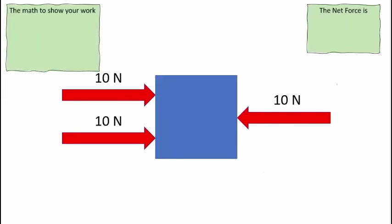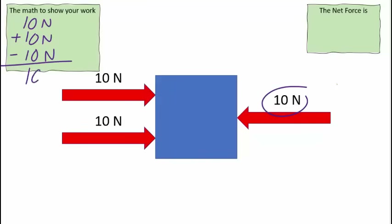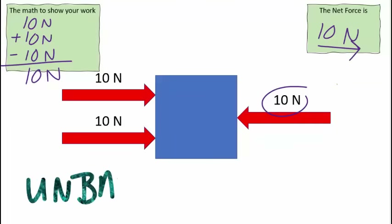Here we have two forces pushing to the right and one force pushing to the left. Those two pushing to the right are going to be working together, and the one pushing to the left is going to be subtracted. So: 10 newtons plus 10 newtons gives us 20, but then we subtract the 10 newtons over here, giving us an overall net force of 10 newtons to the right. This is also unbalanced because it's not 0.